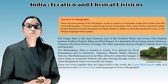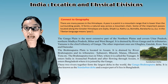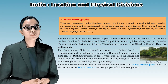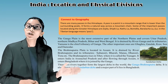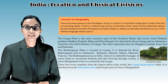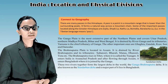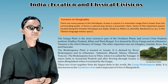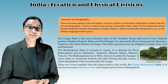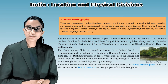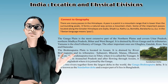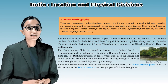The Ganga Plain is the most extensive part of the northern plains, covering Uttar Pradesh, northern Madhya Pradesh, Bihar, and West Bengal. It is drained by River Ganga and its tributaries, with Yamuna as the chief tributary. Other important tributaries are Ghagra, Gandak, Kosi, Son, and Damodar. The Brahmaputra Plain is located in Assam, drained by River Brahmaputra and its tributaries: Subansiri, Bharali, Manas, Dhansiri, and Teesta.